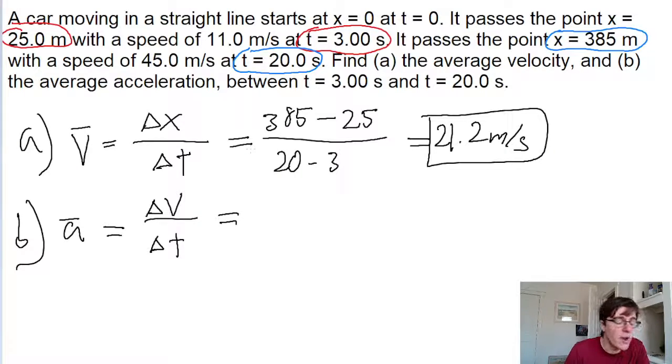From the problem, at t equals 20 seconds, the speed is 45 meters per second. So 45 meters per second minus the initial speed of 11 meters per second, divided by the same time interval.